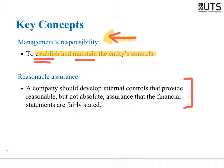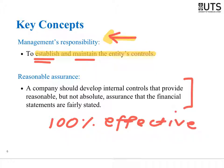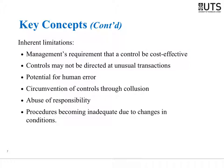Controls are very rarely 100% effective. It is very rare that a control will eliminate a risk completely. The reason is what we call inherent limitations of controls.